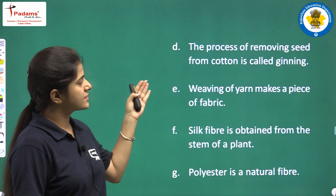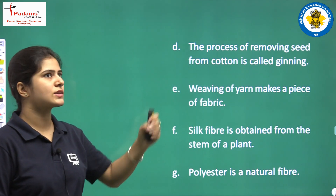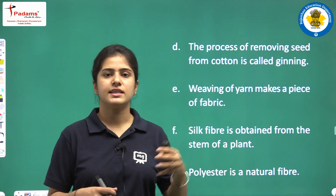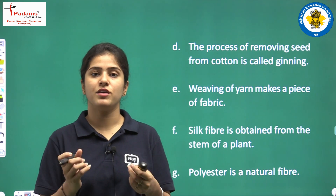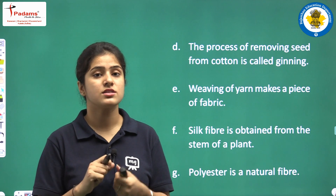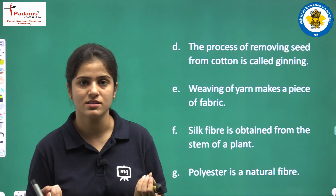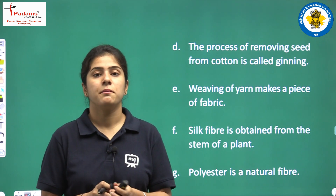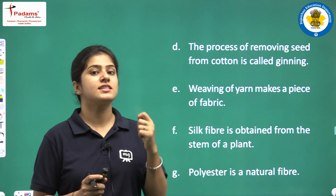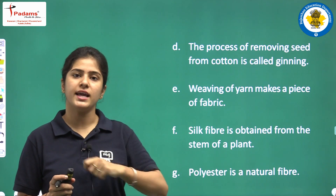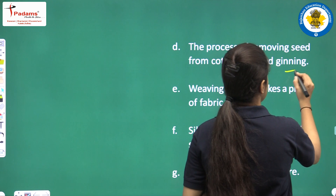Next: The process of removing seeds from cotton is called ginning. This statement says that ginning is the process of separating seeds from cotton fibers. Is it right? Yes, it is right. Ginning is the process in which we separate the seeds from the cotton fibers by combing. So this statement is true.